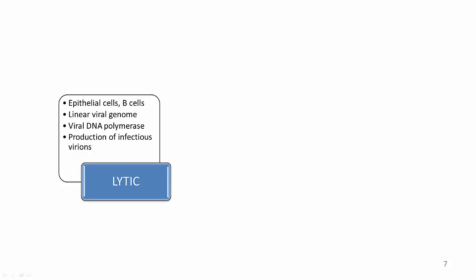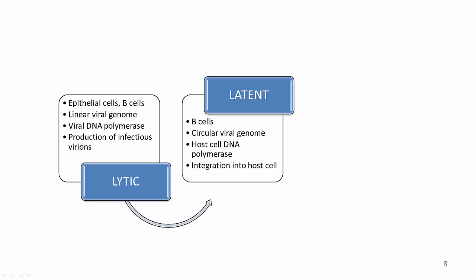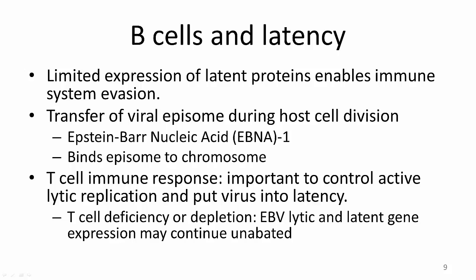How does EBV maintain the latent stage? When EBV infects a B lymphocyte and enters the latent stage, its linear genome circularizes to form an episome, or extrachromosomal element, which is then copied by host cell DNA polymerase and integrated into the nucleus of the host cell. The result is a transformation of the infected B cells, which acquire the capacity to proliferate indefinitely. In latency, only a portion of EBV's genes are expressed — in vitro, latently infected B cells express only 10 of approximately 80 viral genes. This limited expression of latent proteins enables immune system evasion, and the state of latent infection is maintained by the ability of the viral nucleic acid in the episome to transfer itself as host cells divide.